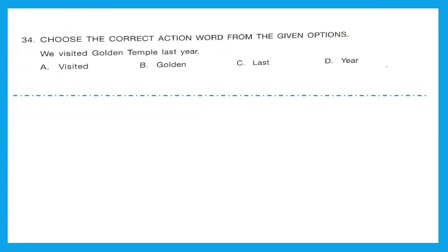Question 34, choose the correct action word from the given options. What is the action word? Action word is actually a verb, the word that tells about the action being performed. Sentence is: we visited Golden Temple last year. What is the action being performed here? It is visited. Option A, visited is the right action word or right verb.